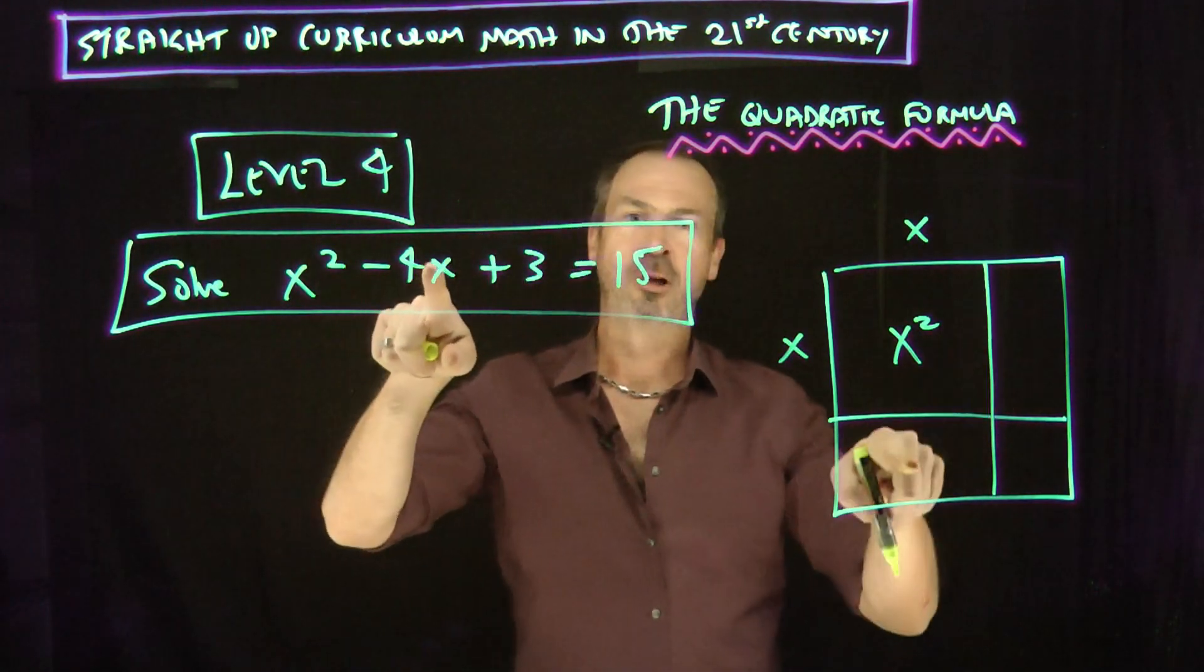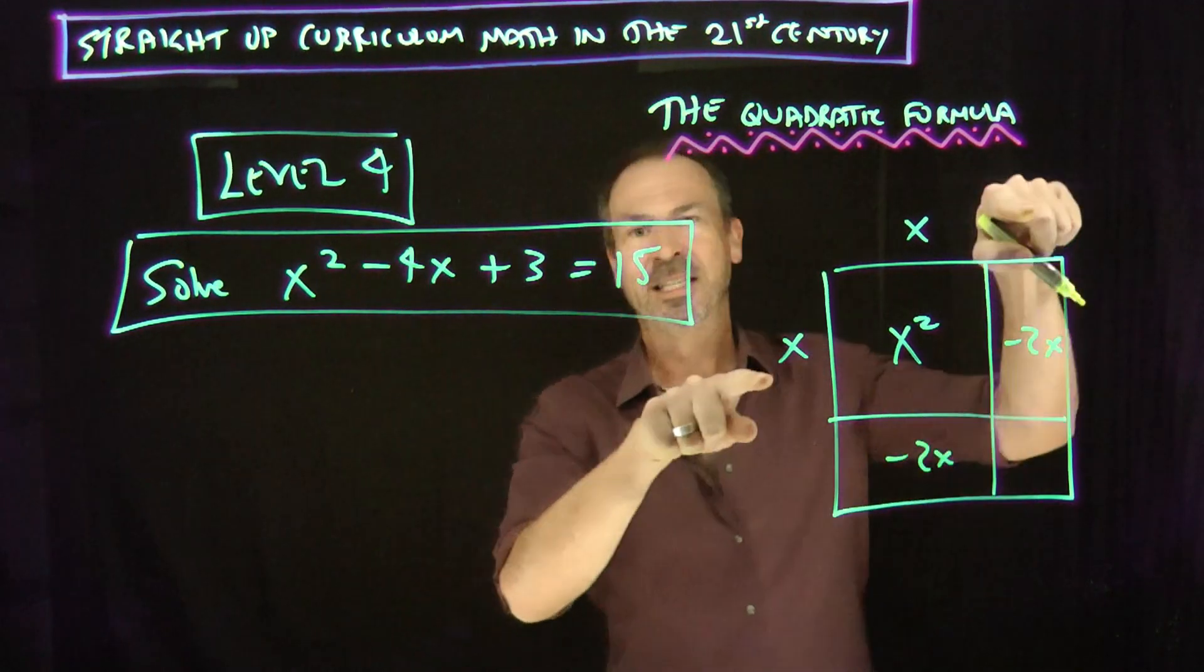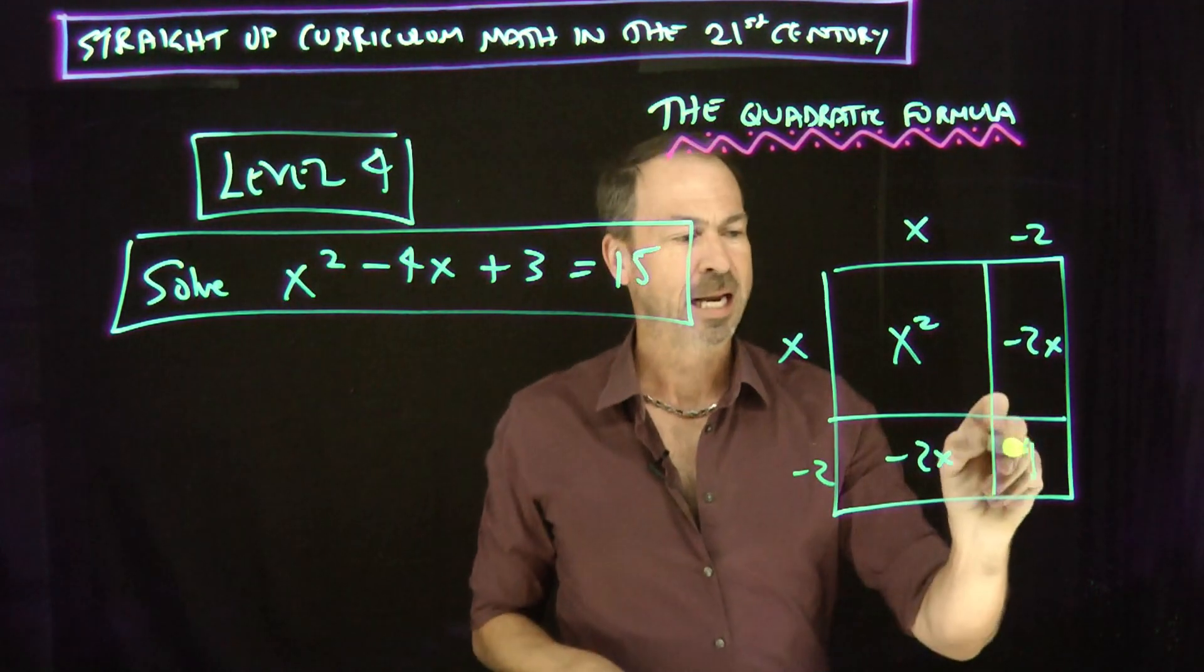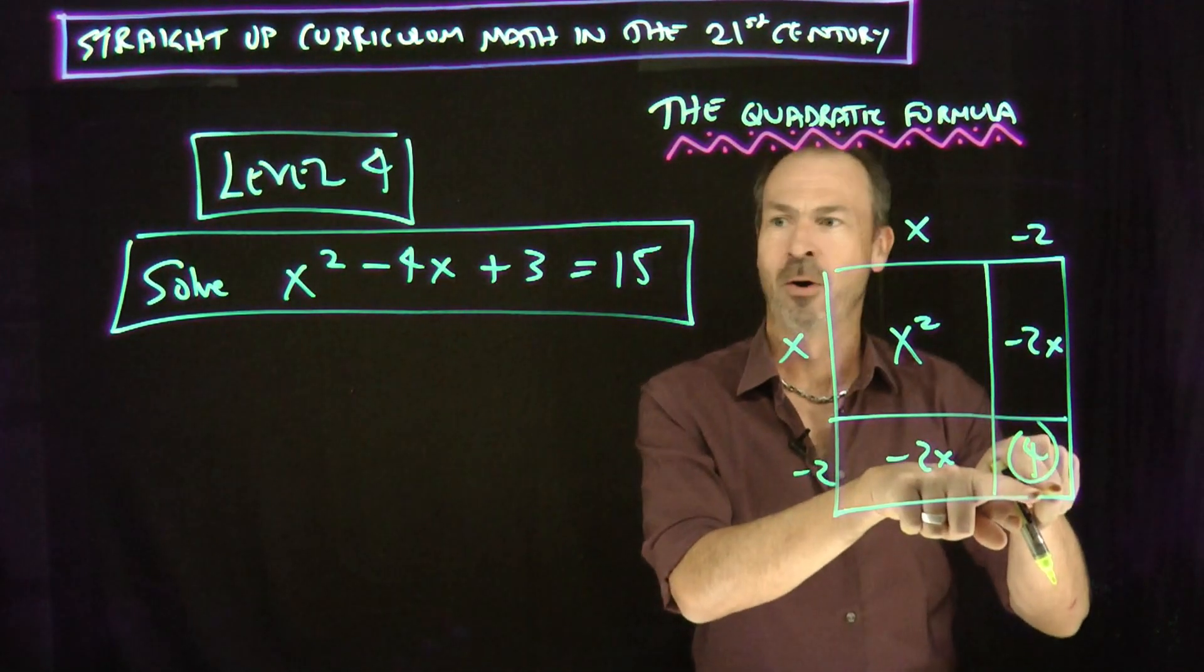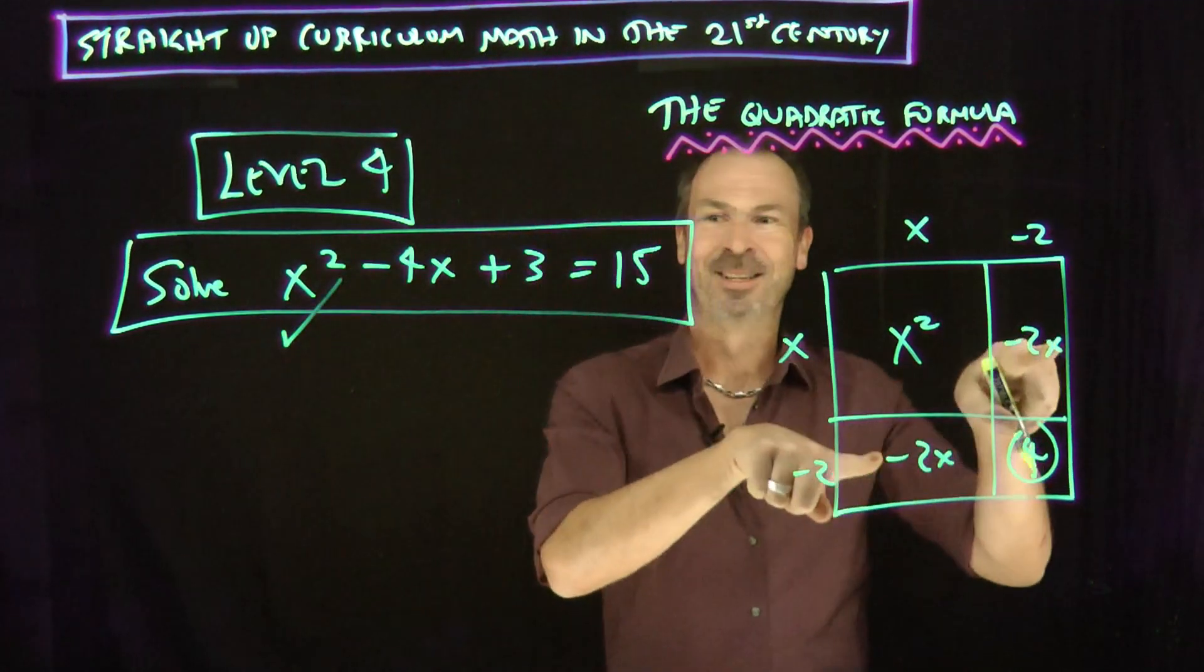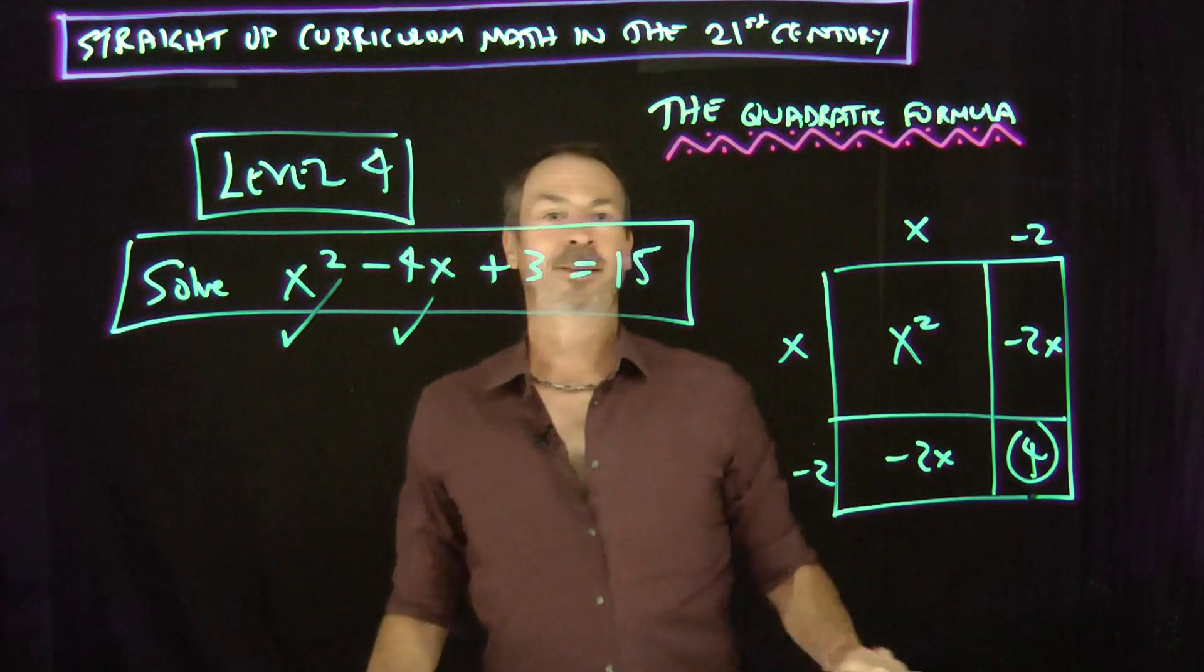Negative 4x will be these two pieces that got split symmetrically, so a negative 2x and a negative 2x. Something times x makes negative 2x. That's going to be negative 2, negative 2, which means the final piece I want here is negative 2 times negative 2 is 4. X squared, yes. Negative 4x, yes.